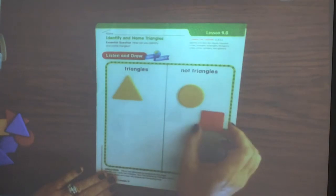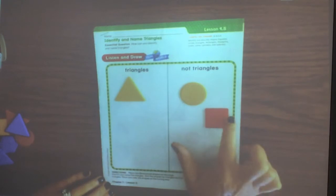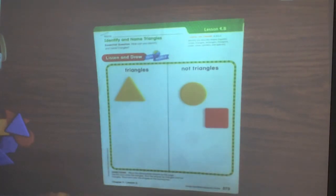This is not a triangle. What is this? Yes, it is a square. One, two, three, four sides. They are all exactly the same length.